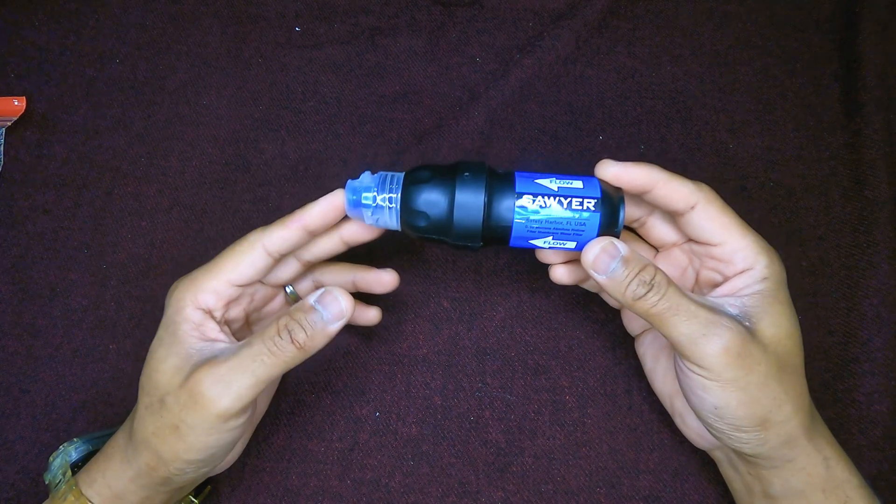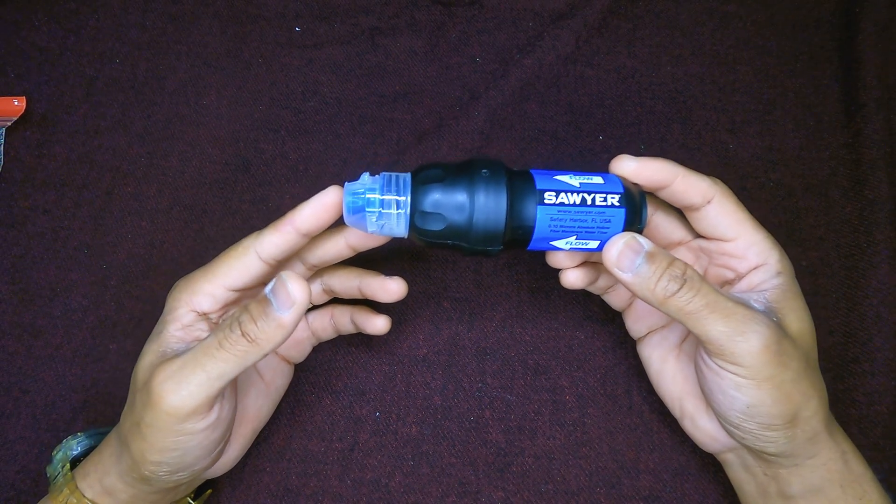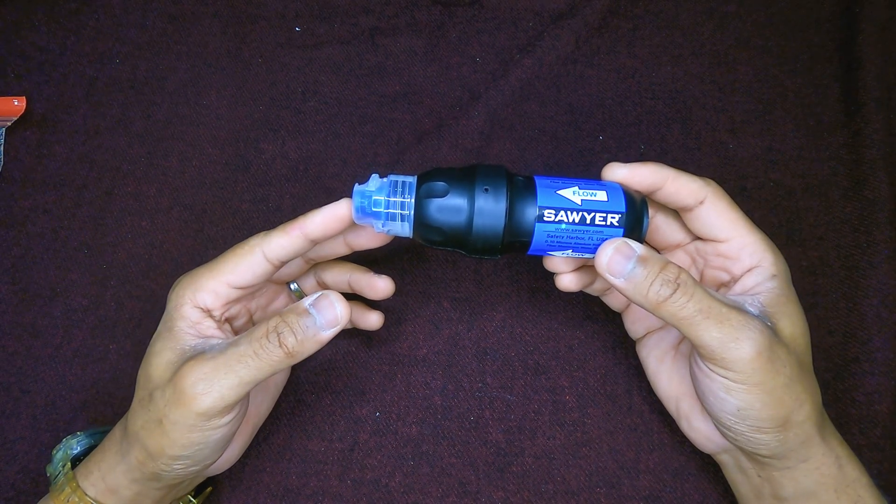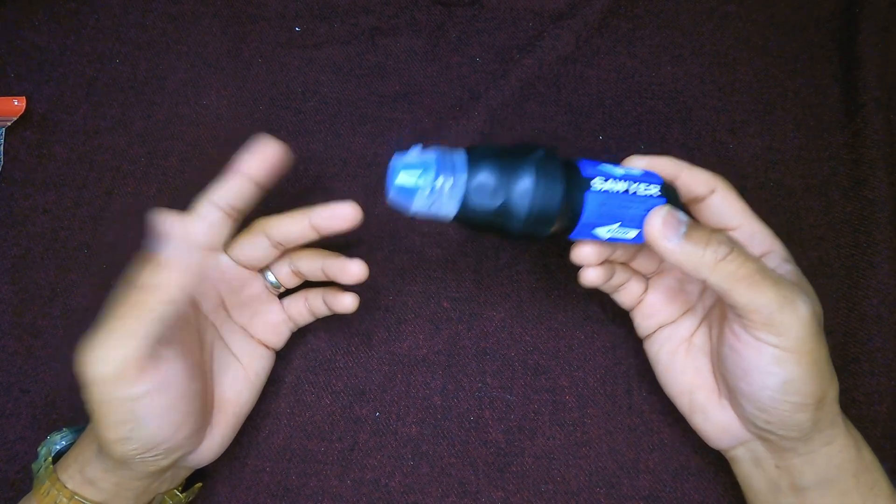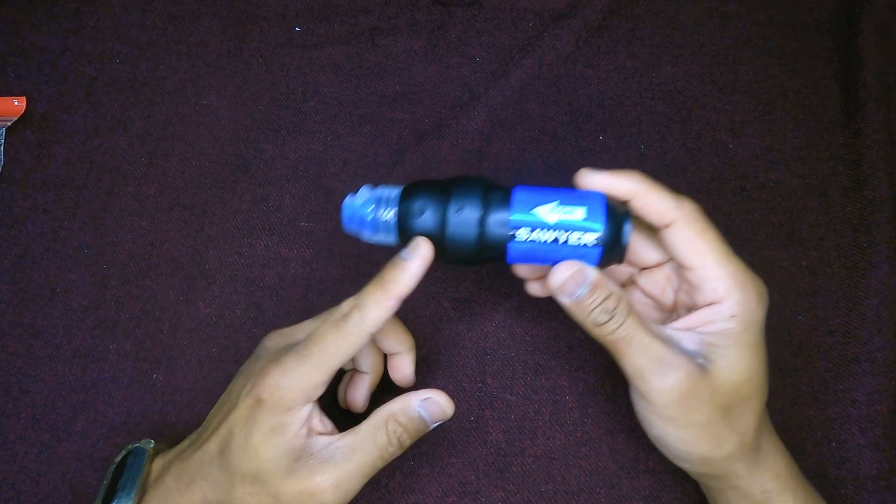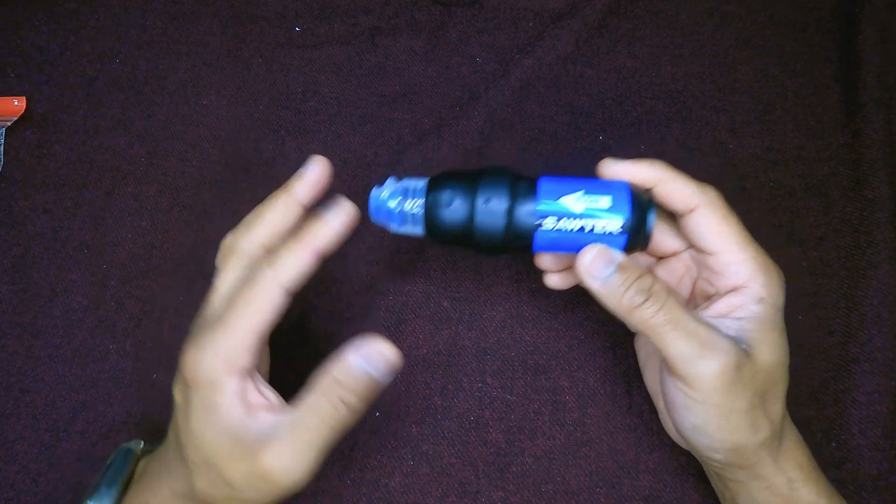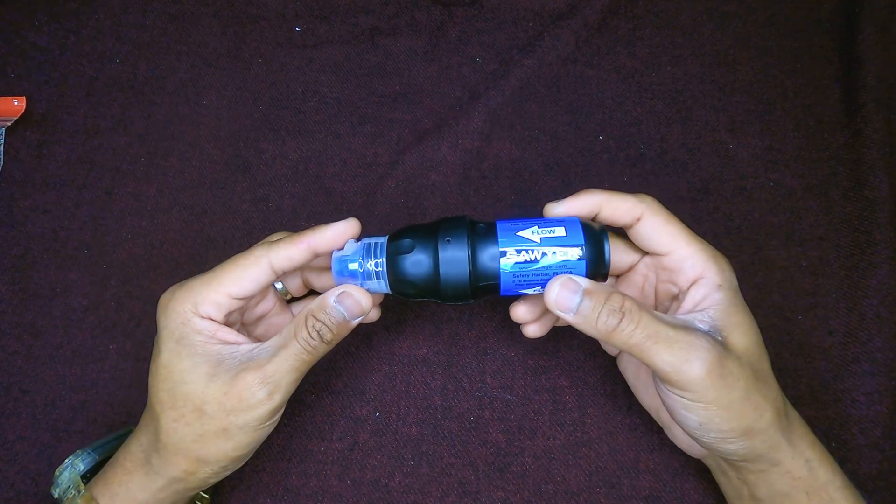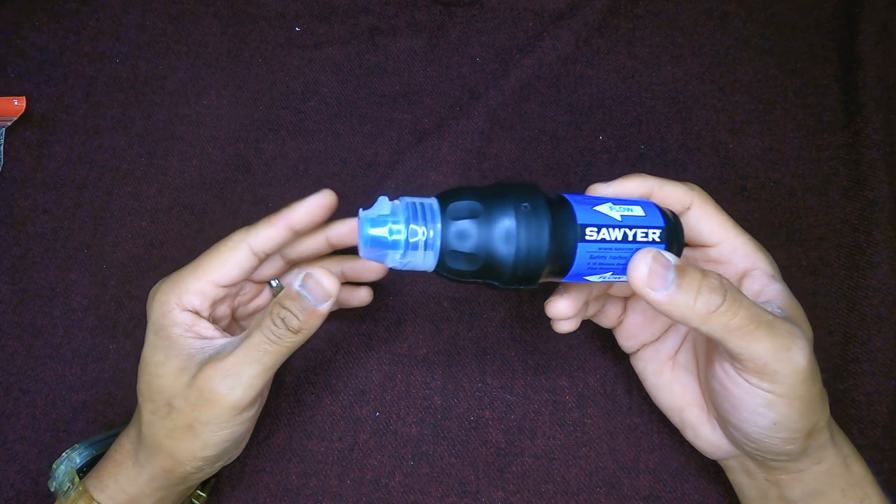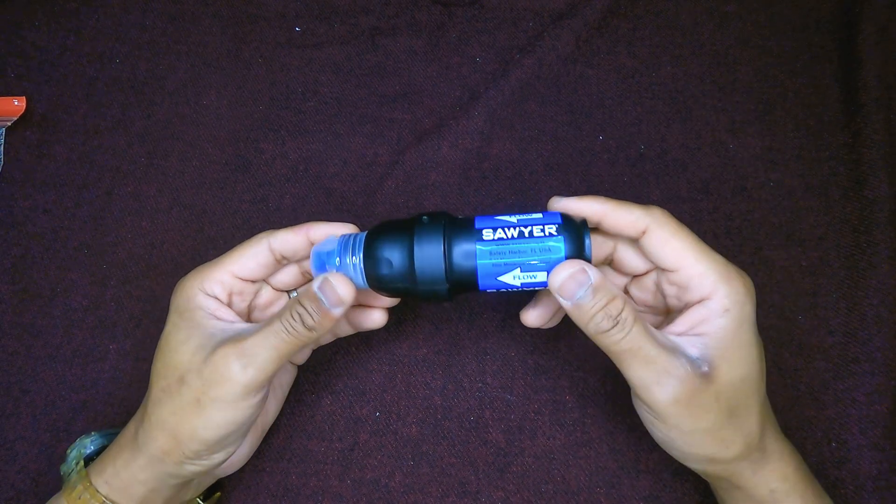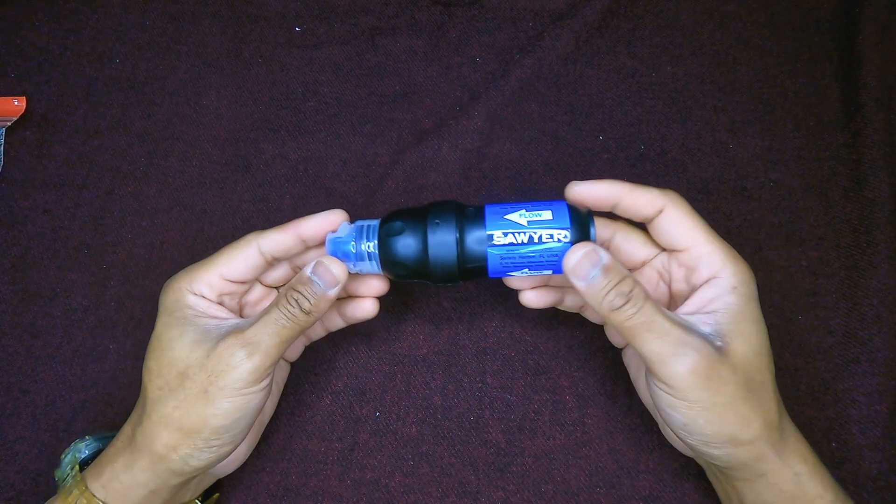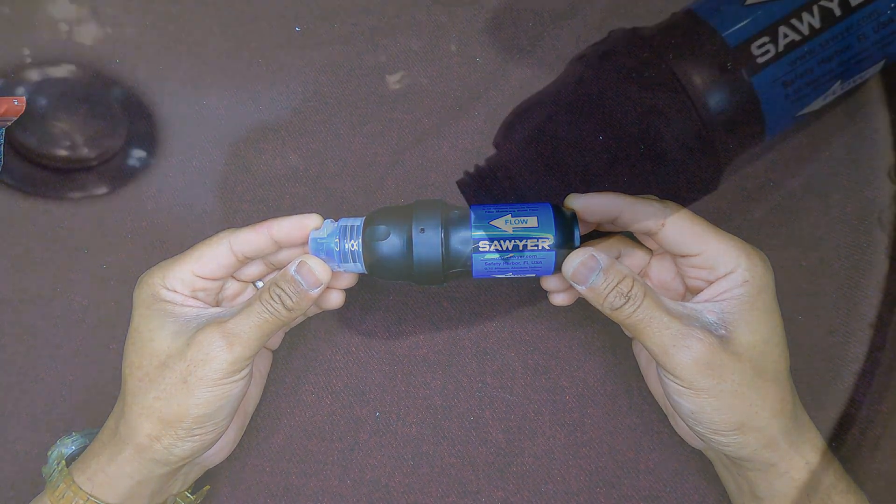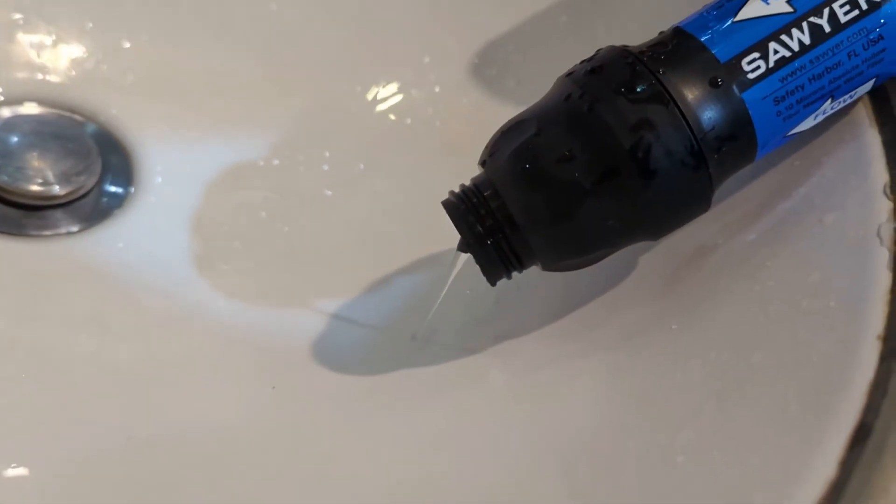In the years before I've heard a lot of people talking about getting poor flow rates and getting frustrated with their Sawyers, then tossing them out and going to things like the BeFree or the Platypus QuickDraw. The reasons why I don't like those, you can check out my comparison video. As far as specifications go, this is still technically superior, so that's why I stick with the Sawyer.